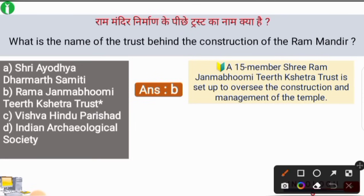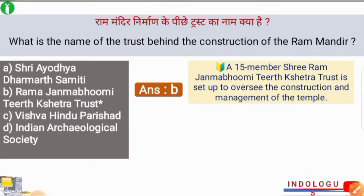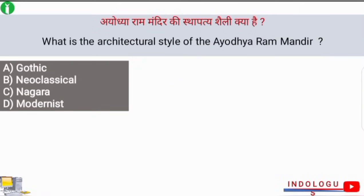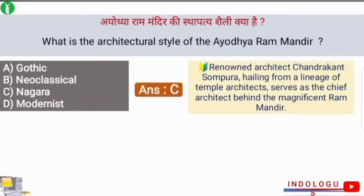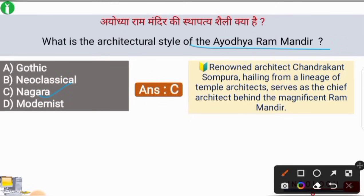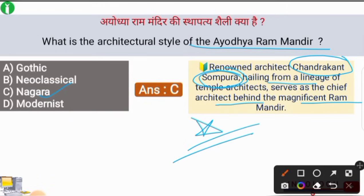The 15-member Shri Ramjanmabhumi Tirth Chhetra Trust is set up to oversee the construction and management of the temple. The total number of members is around 15. What is the architectural style of the Ayodhya Ram Mandir? The correct answer is option number C, i.e. Nagar style. Renowned architect Chandrakant Sompura, hailing from a lineage of temple architects, serves as the chief architect behind the magnificent Ram Mandir.